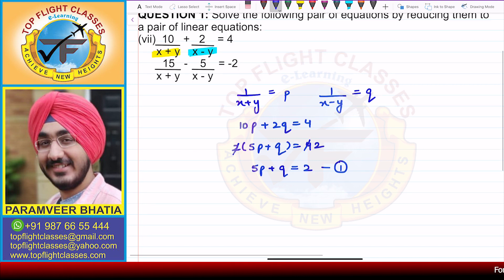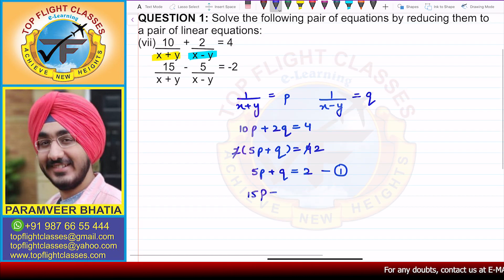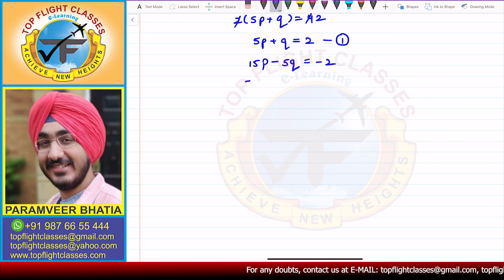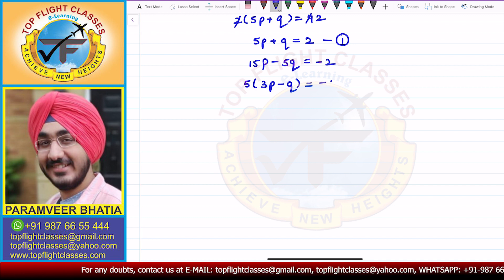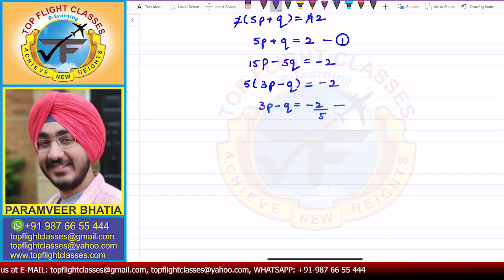The second equation gives us 15P - 5Q = -2. Taking 5 as common, we get 3P - Q = -2/5. So 3P - Q = -2/5 is the second equation.